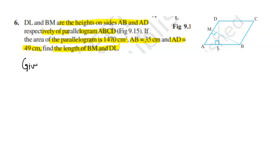So we have given that the area is equal to 1470 cm², AB is equal to 35 cm, and AD is equal to 49 cm.